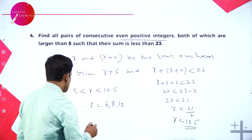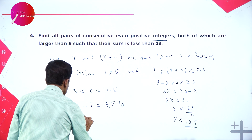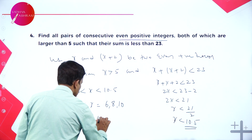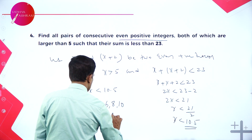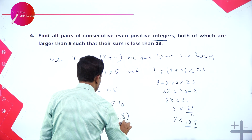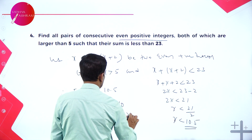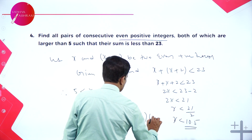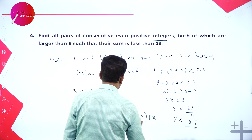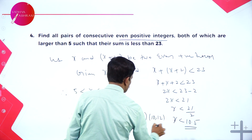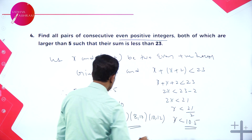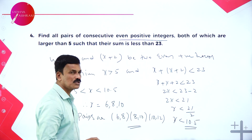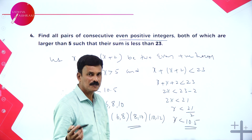Therefore, the possible pairs of consecutive even positive integers are (6, 8), (8, 10), and (10, 12).